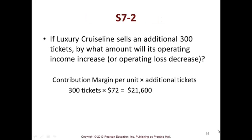Looking at S7-2, a luxury cruise line sells an additional 300 tickets and wants to know by what amount will its operating income increase. You take the contribution margin per unit times the additional tickets — 300 tickets times $72 — which is $21,600.